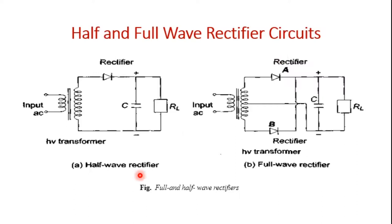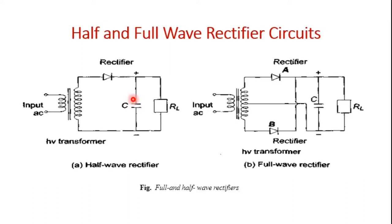In the half-wave rectifier, the capacitor is charged to V-maximum from the AC voltage of the secondary of the high voltage transformer during the conducting half cycle. In the other half cycle, the capacitor discharges into the load. The value of the capacitor is chosen such that the product of capacitance and R-L is at least 10 times the period of the AC input voltage. The rectifier valve must have a peak inverse voltage of 2V-maximum, and an additional resistance is added in series with the secondary of the transformer.